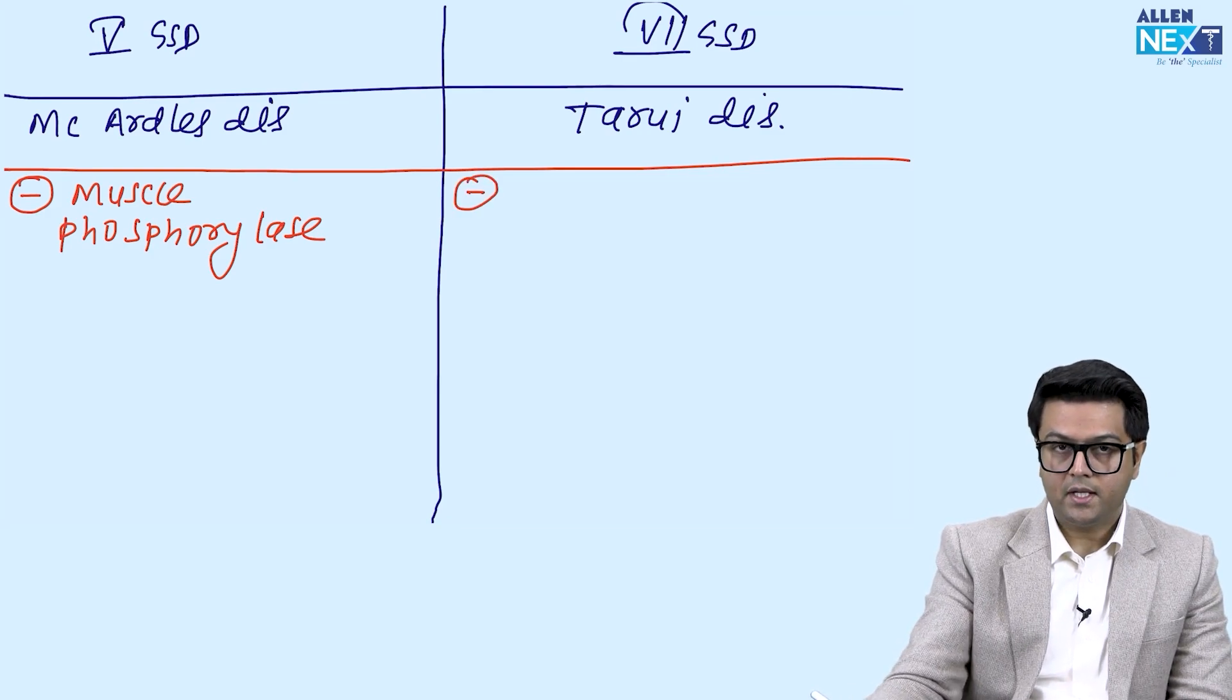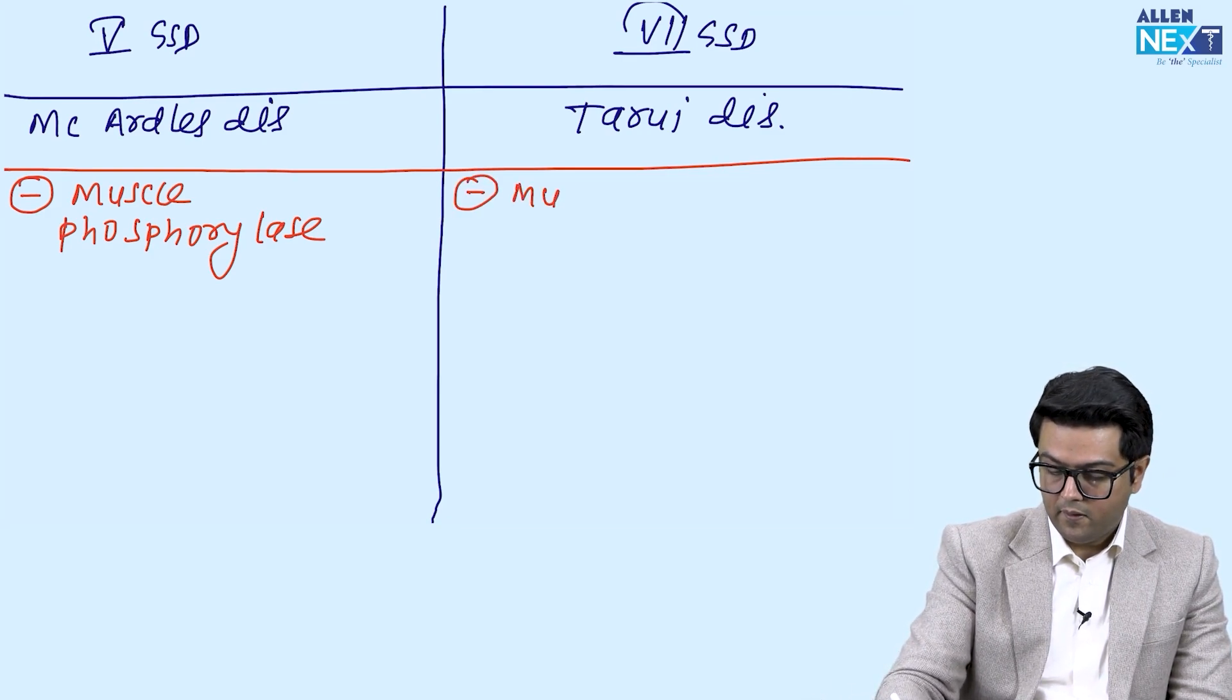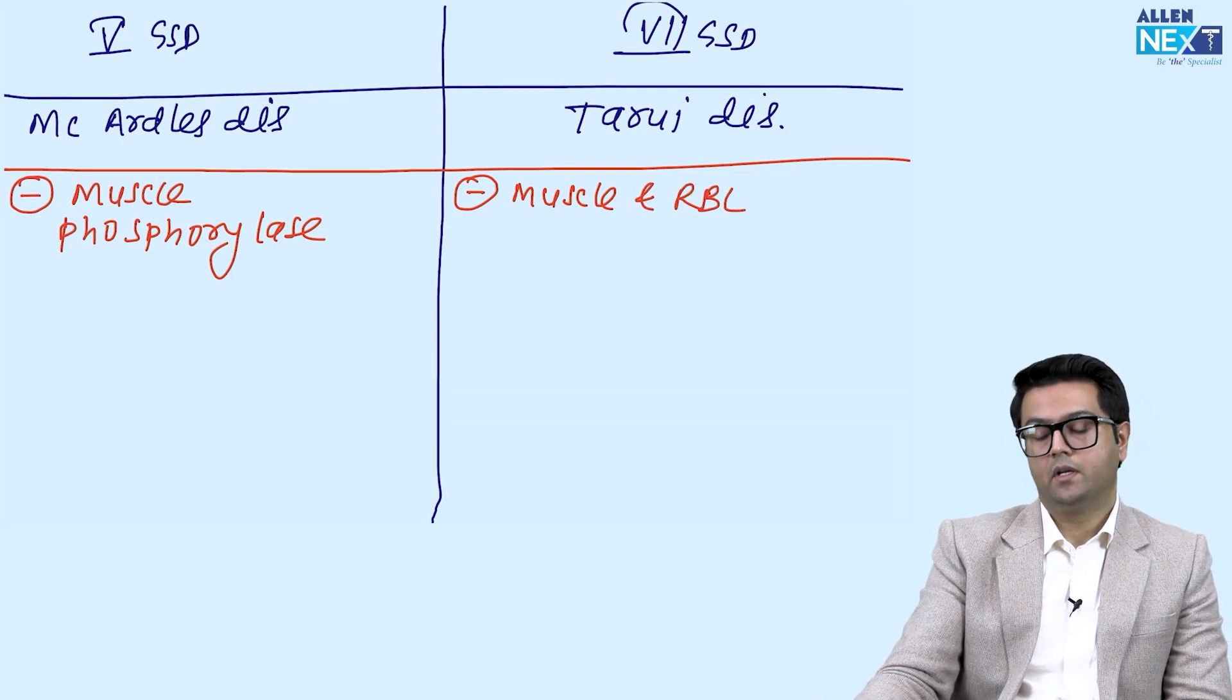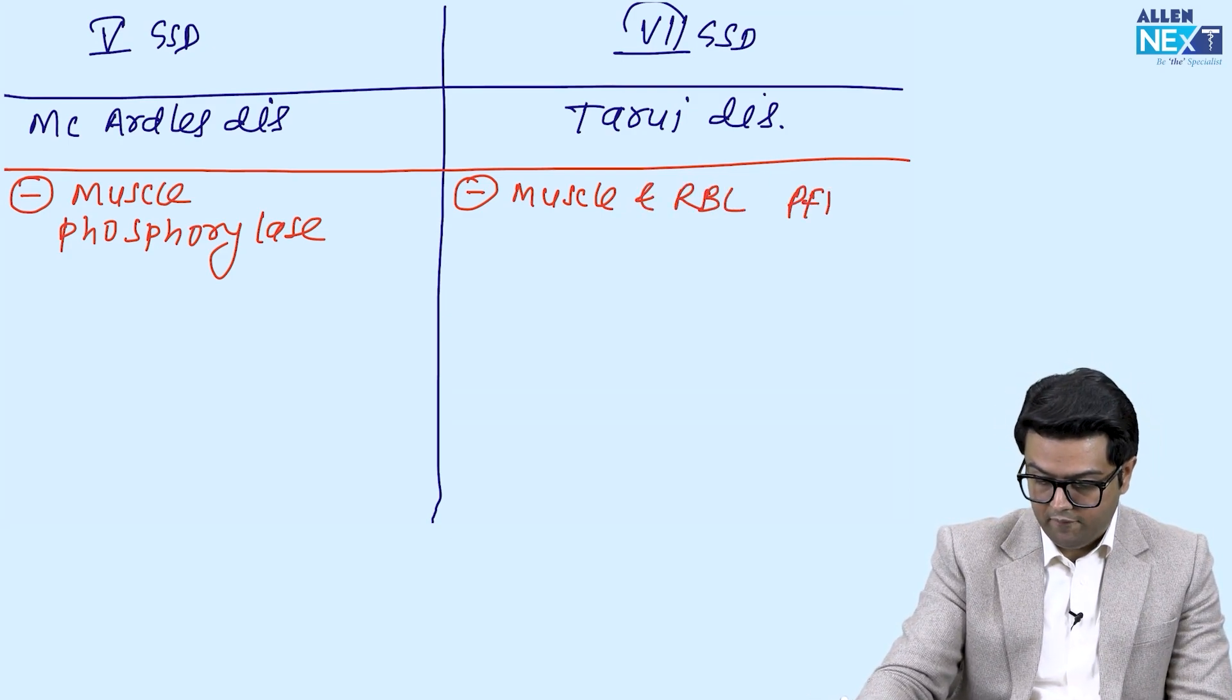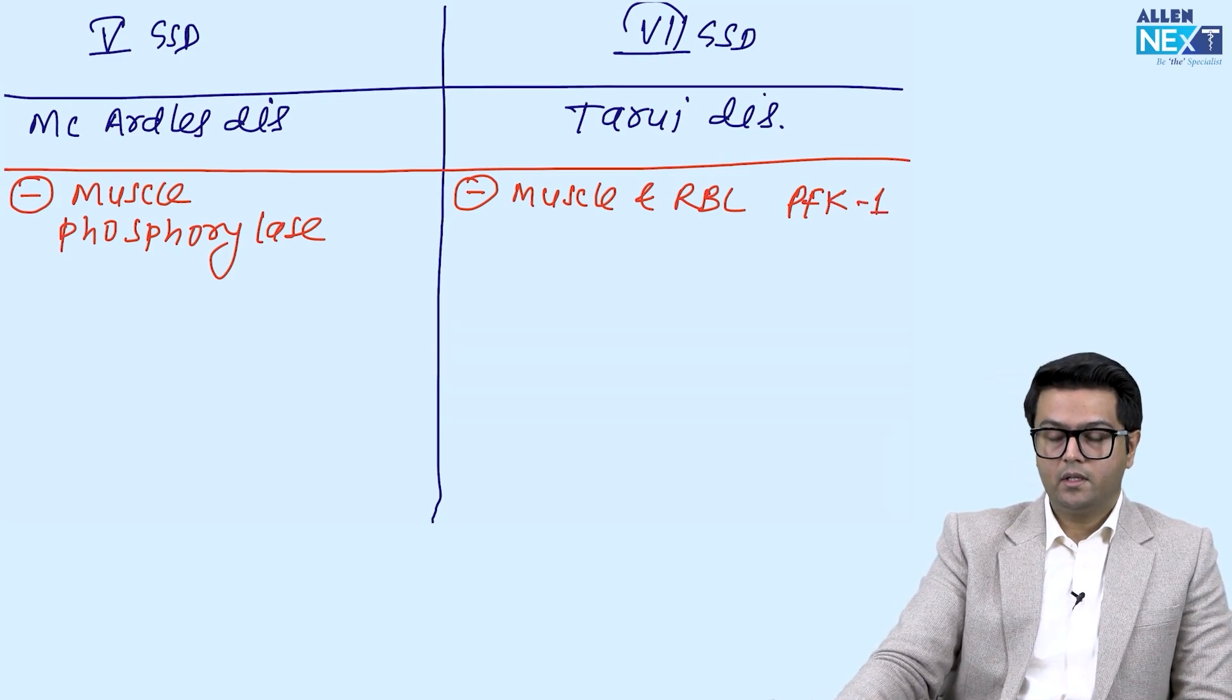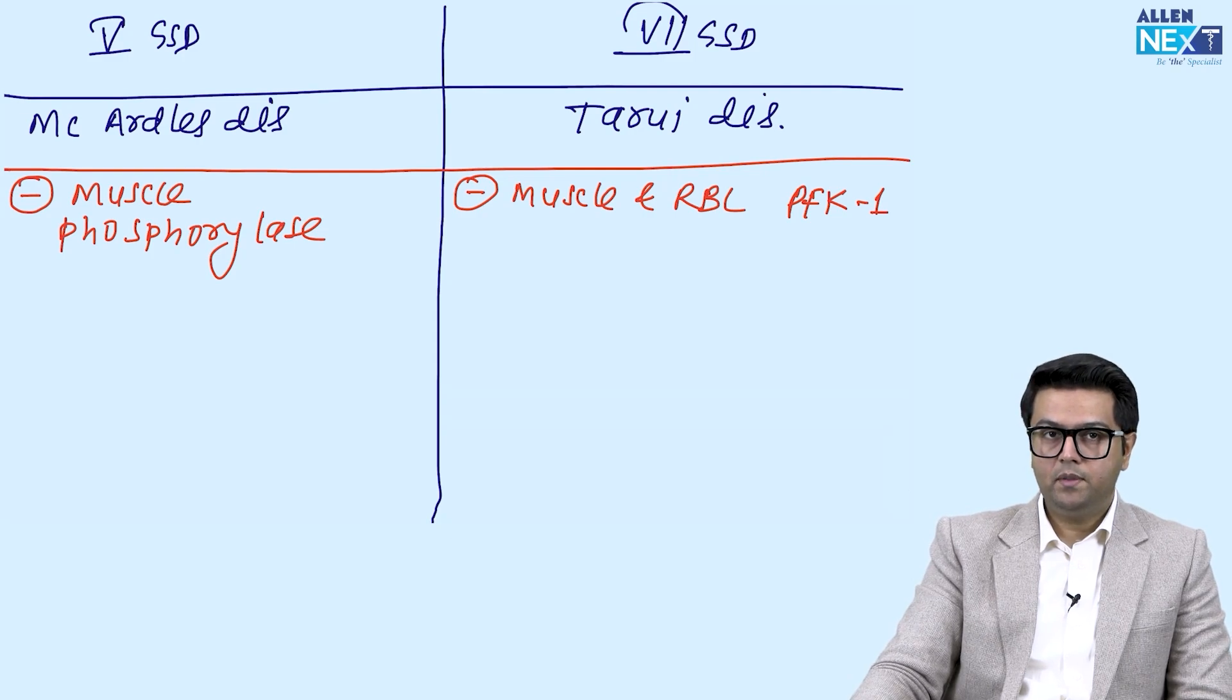In this case, the deficient enzyme is called muscle and RBC PFK-1, that is the rate limiting enzyme of glycolysis.